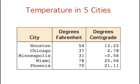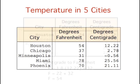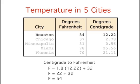This table shows the temperatures of five U.S. cities in the early afternoon of November 16, 2002. The temperatures are given in both Fahrenheit and Celsius. To convert Houston's temperature in Celsius to Fahrenheit, multiply Houston's temperature in Celsius, 12.22, by 1.8 and then add 32. This equals 54.